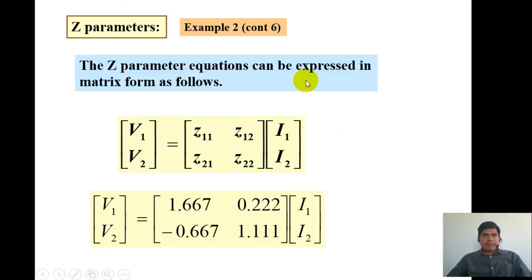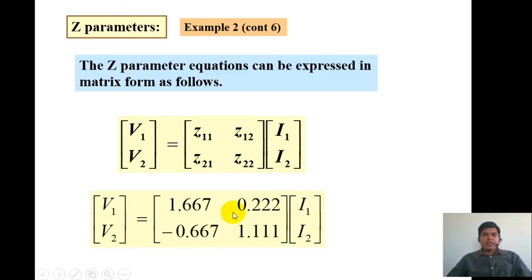We can now write the Z-parameter matrix as [V1, V2] = [Z11, Z12; Z21, Z22] × [I1, I2], where Z11 ≈ 1.667, Z12 ≈ 0.222, Z21 ≈ −0.667, and Z22 ≈ 1.111 ohms. Since Z11 ≠ Z22 and Z12 ≠ Z21, this network is both non-reciprocal and non-symmetrical. In the next lecture I will be explaining about the H-parameters and its examples. Thank you.